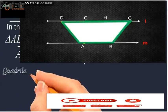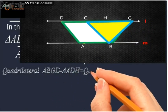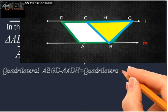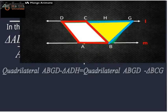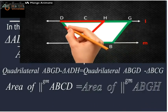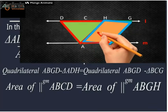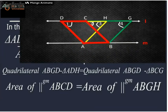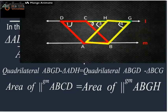Now, if we subtract each triangle from the whole figure — that is, from quadrilateral ABGD — we get parallelogram ABCD on the left-hand side and parallelogram ABGH on the right-hand side. Thus, we conclude that both parallelograms ABCD and ABGH have the same area, that is, they are equal in area. And this is what we wanted to prove.